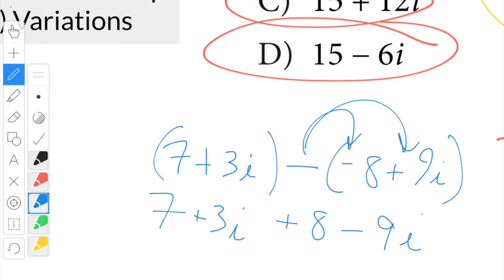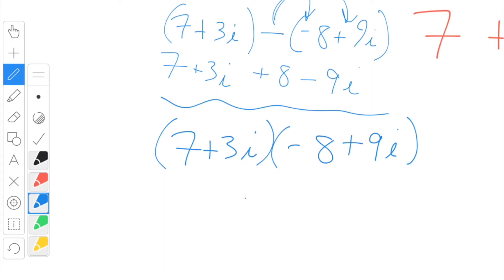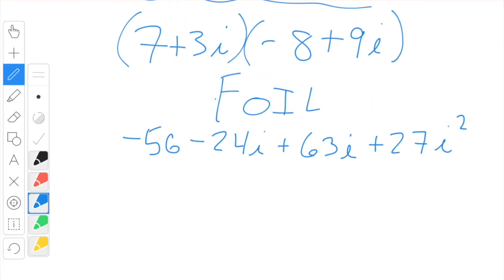If they really wanted to make it a lot more difficult, another variation, they could have said multiply, in which case you would have to FOIL. Now in this case, i squared does become negative 1, so this entire expression becomes... But that, of course, is a lot harder.